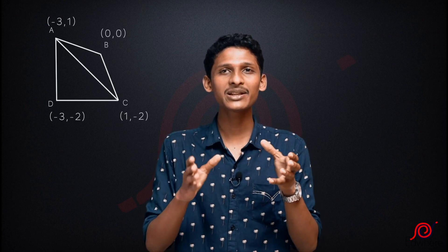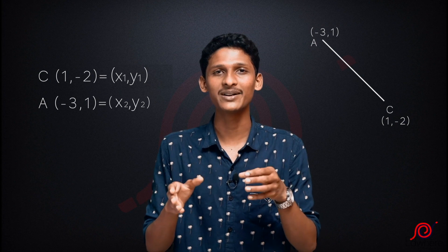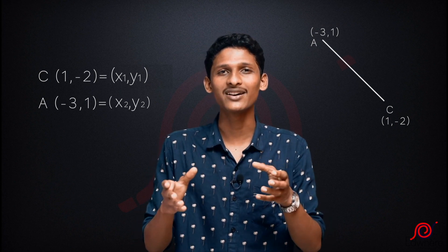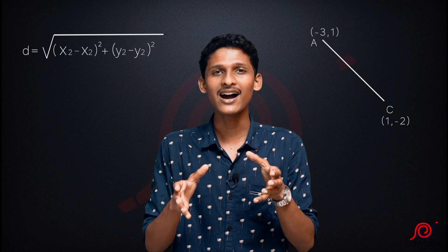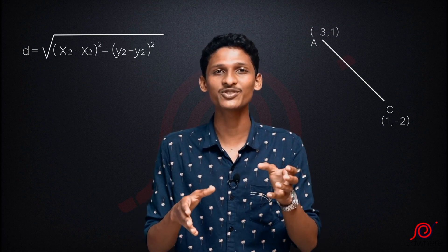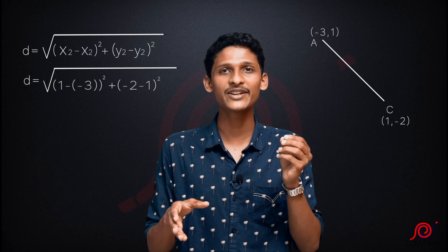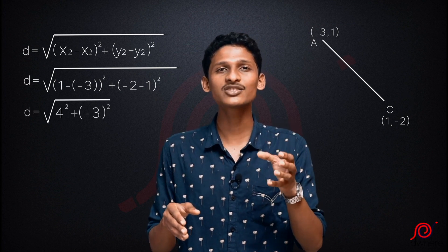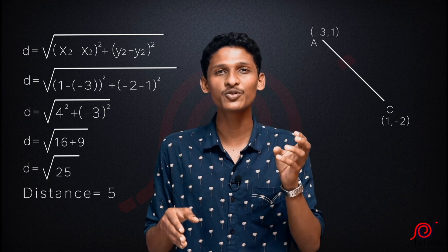Now we move on to diagonal AC. A is (-3, 1) and C is (1, -2). Neither point is the origin, so we use the general formula: root of (x1 minus x2)² plus (y1 minus y2)². Substituting: root of (1 minus (-3))² plus (-2 minus 1)², that is root of 4² plus (-3)², equal to root of 16 plus 9, that is root 25, which equals 5. The length of the diagonal AC is 5.